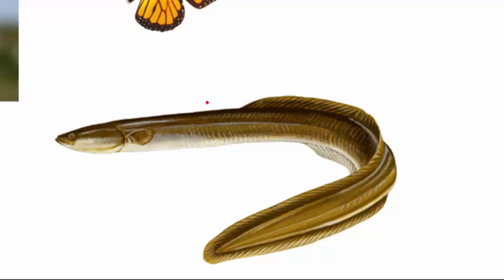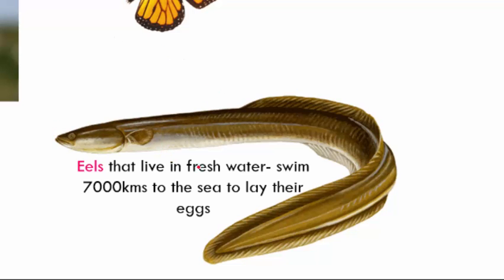The next example is the eel — a freshwater eel that lives in rivers. It swims about 7,000 kilometers towards the sea, lays its eggs there, and then dies. Once those eggs hatch, the young ones swim back to the fresh water river from which their parents came.